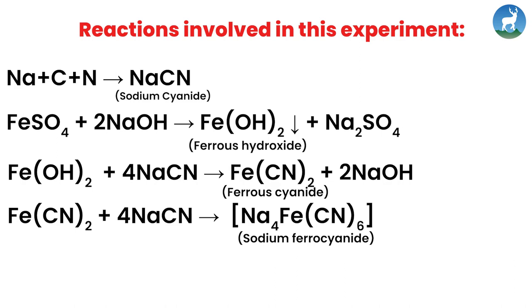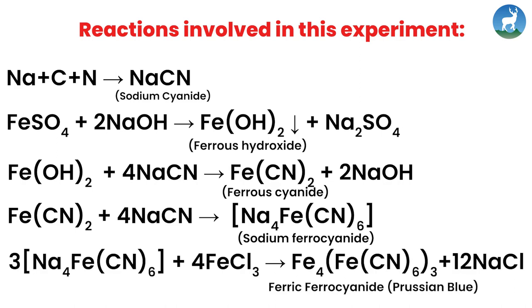Ferrous cyanide reacts with sodium cyanide to form sodium ferrocyanide. Sodium ferrocyanide reacts with ferric chloride to form ferric ferrocyanide. This is the compound that gives Prussian blue color.